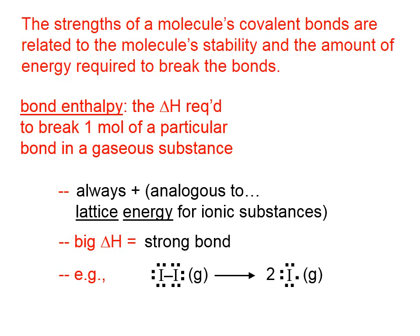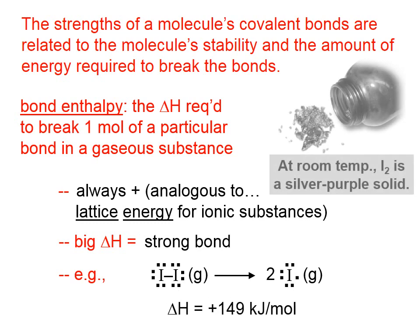In order to break the bonds between the iodine atoms, we need to put energy in, and what we get out are two gaseous iodine atoms. We need, in this case, 149 kilojoules per mole of these I-I bonds in order to achieve that.